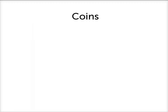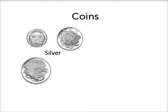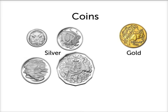Now let's look at the coins. Again we'll go from smallest to largest. Let's start with the silver coins. There is a five cent piece, a 10 cent piece, a 20 cent piece, and a 50 cent piece. Then there are also two gold coins: a $1 coin and a $2 coin.